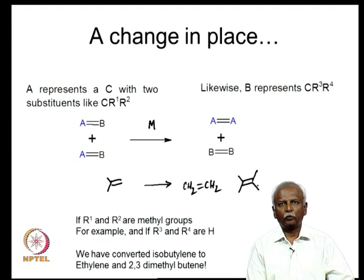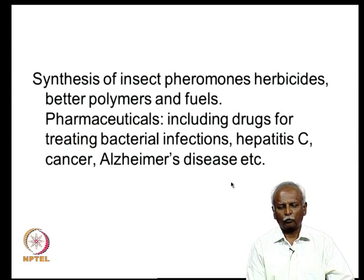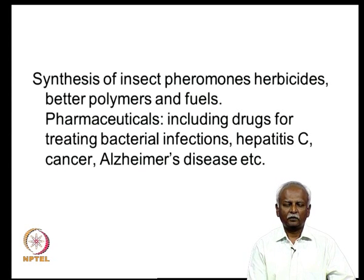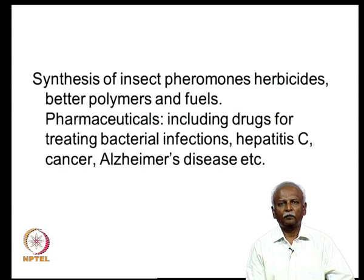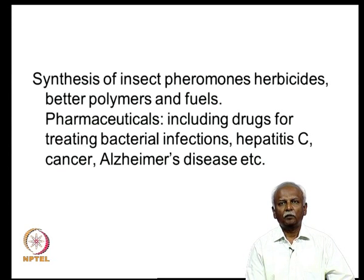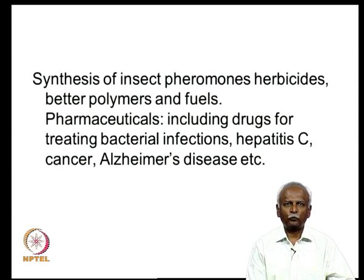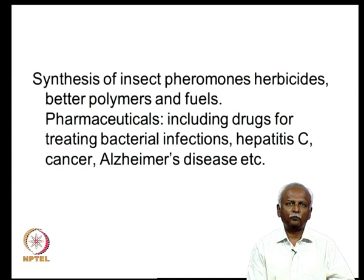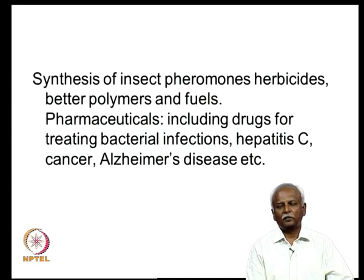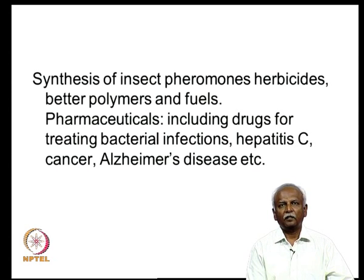We have the possibility of converting, for example, isobutylene to a variety of olefins including ethylene and 2,3-dimethylbutene. You can get various molecules starting with a simple set of olefins. This has led to an enormous spurt in the organic synthetic field.